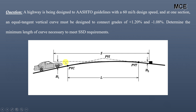We can have two cases: either the length of the vertical curve — from the PVC (point of vertical curvature) to the PVT (point of vertical tangency) — is greater than the stopping sight distance, or it is smaller than the stopping sight distance. We have to assume one case and then calculate the length of the curve. If our assumption is correct, the calculated length is taken as the design value.